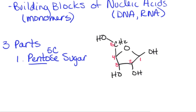Depending on whether we're talking about DNA or RNA, the actual sugar is a little bit different. The one drawn here happens to be ribose, which is the one you would find in RNA — that's where the R in RNA comes from. If we were talking about DNA, the only difference is that in DNA we don't have this particular hydroxyl group. That's where deoxyribose comes from, so now we are looking at the DNA form — deoxyribose.